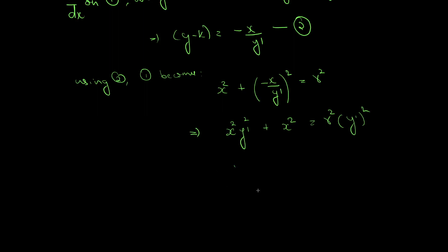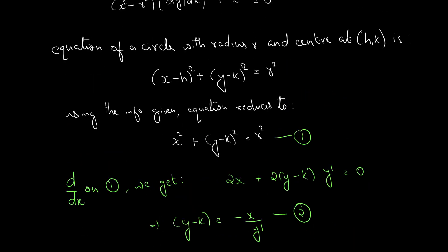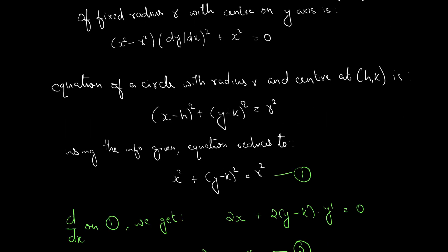We can group the terms: bringing the R squared y dash squared term to the left-hand side gives us x squared minus R squared into y dash squared plus x squared equal to 0. This is the required equation. Checking against the given form, x squared minus R squared into dy by dx the whole square plus x squared equals 0, which matches.